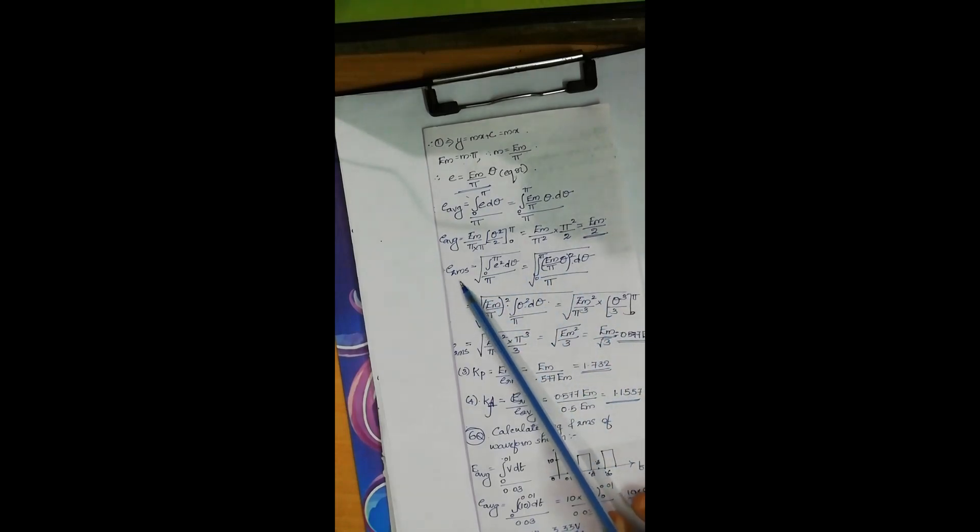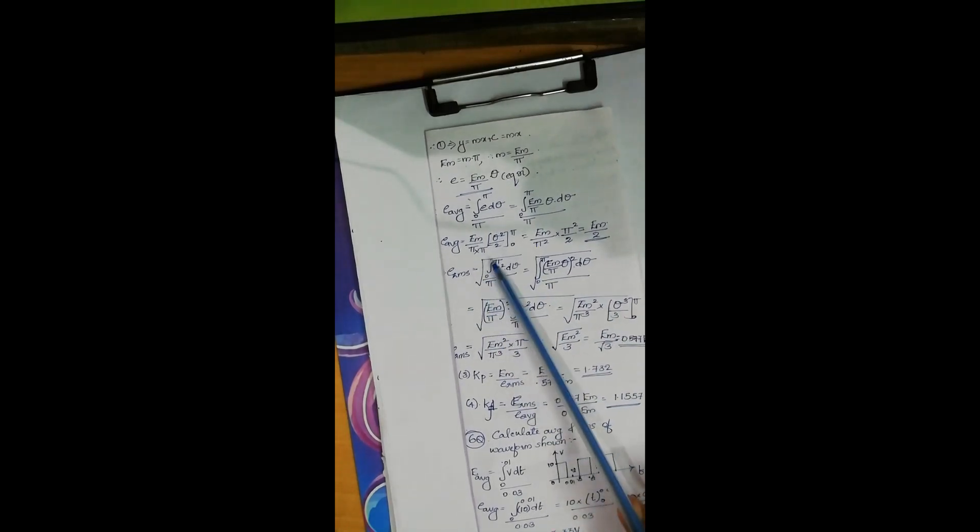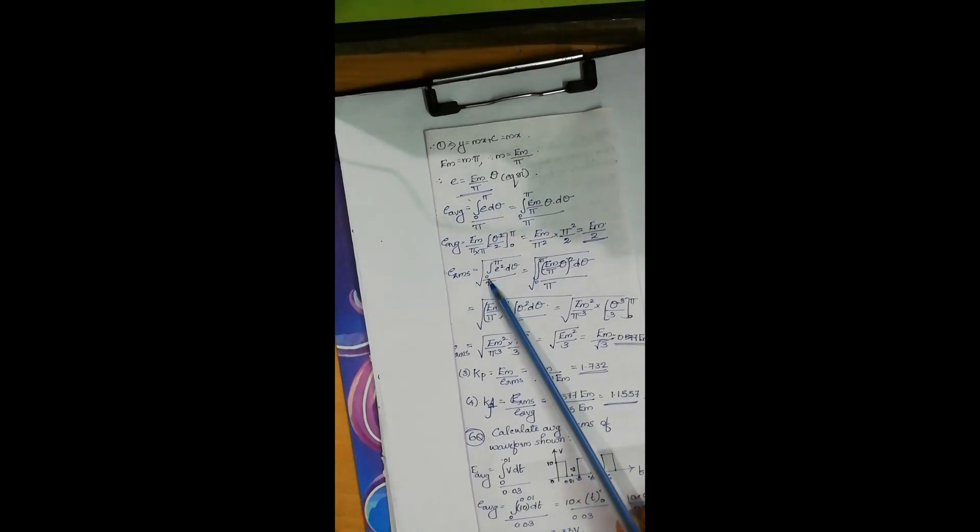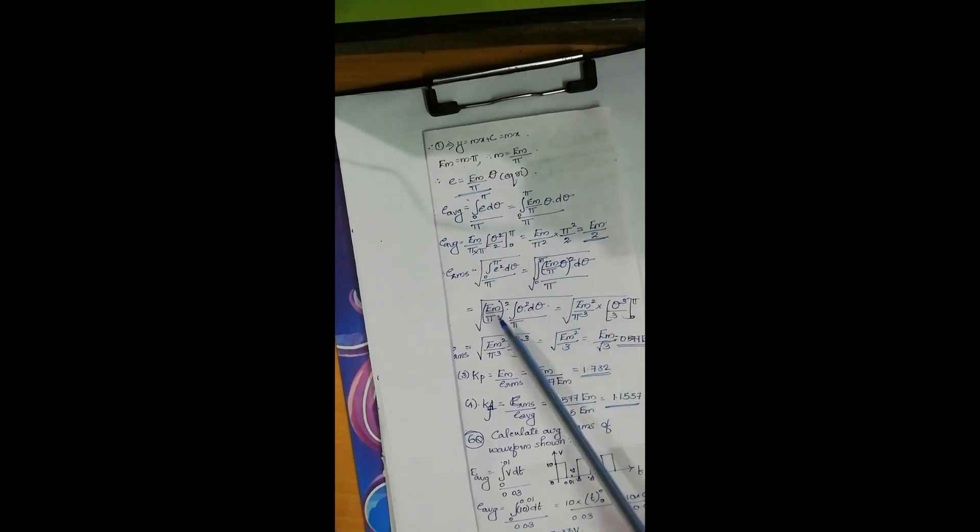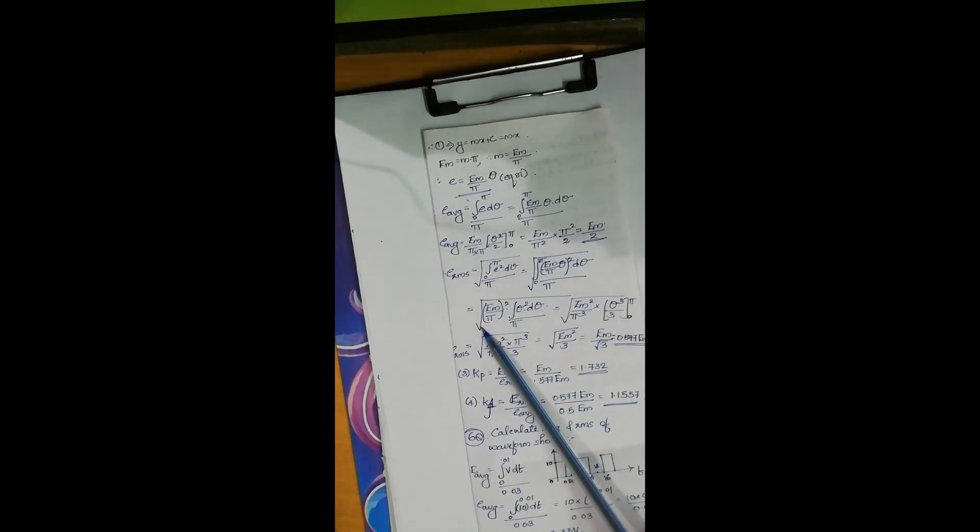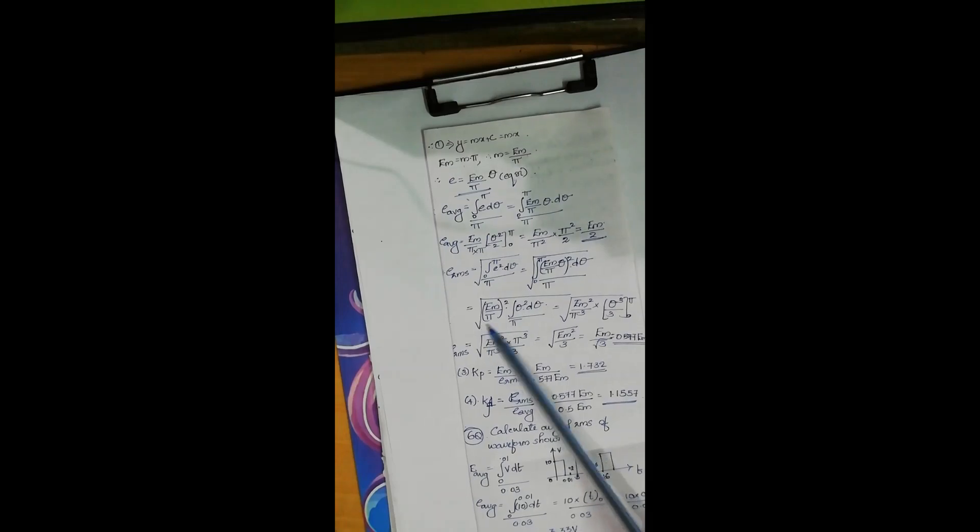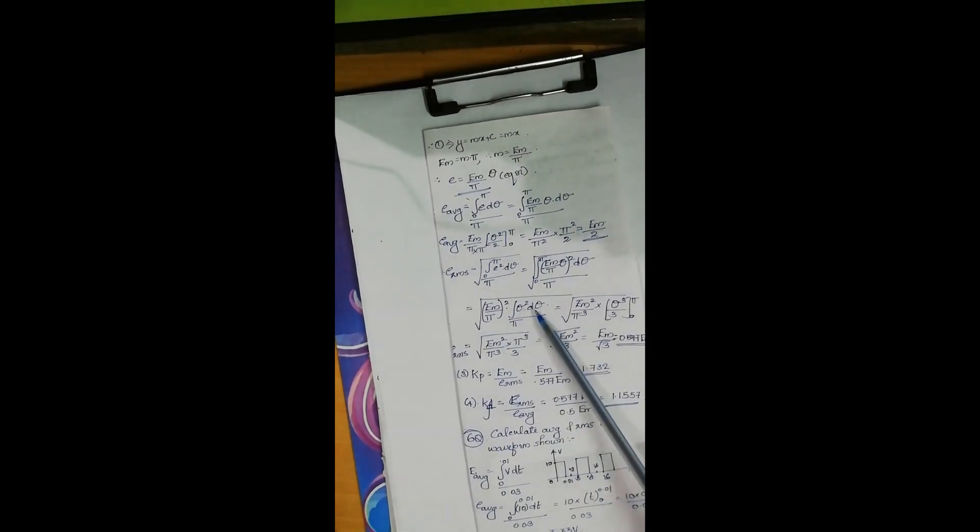And for the RMS calculation, we have square root of integral 0 to pi, e square d theta divided by pi, where e is substituted as Em by pi theta the whole square. So Em by pi the whole square is taken outside and it is integrated over theta square d theta.